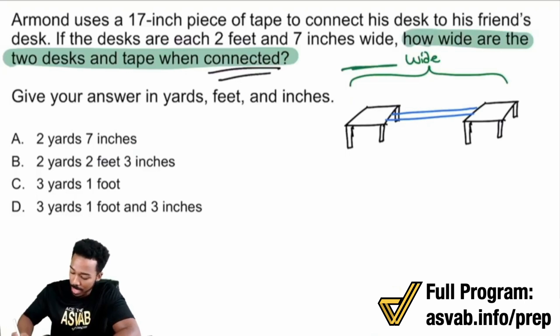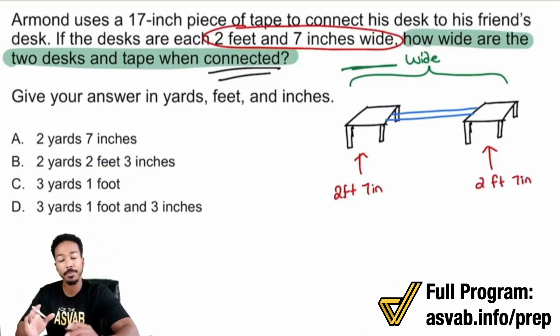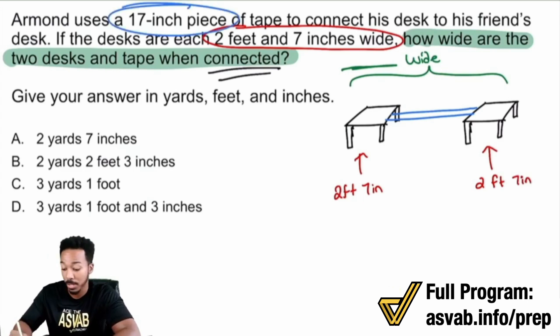Desk, desk, tape connecting it. What we want is how wide this all is together. Now what do we have? Well, the information that we have tells us that the desks are two feet and seven inches wide.